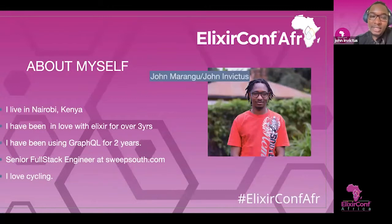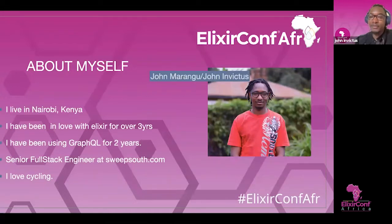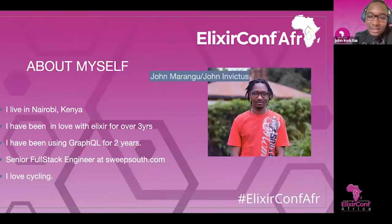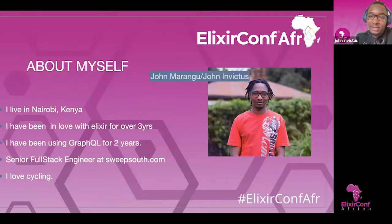About myself: I go by the name John Marangu, but most of the community members know me as John Invictus. You can find me on GitHub, Twitter, and other social media as John Invictus. I live in Nairobi, Kenya, which is the biggest city in Kenya.